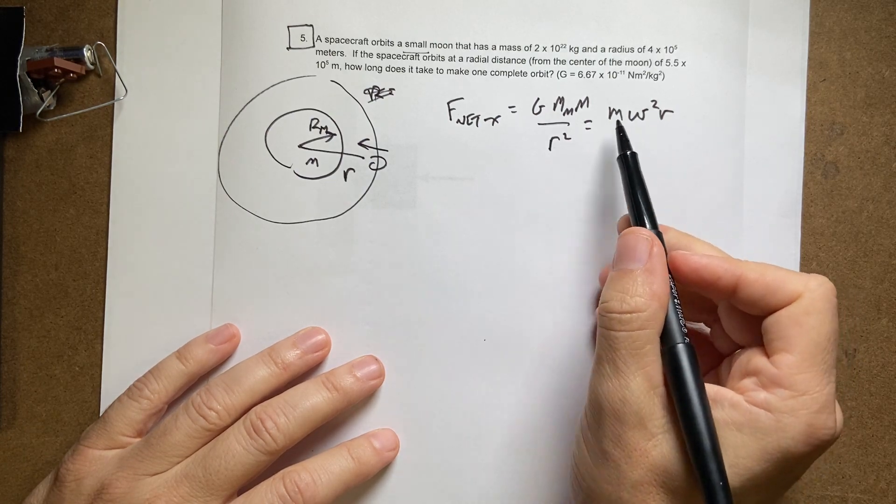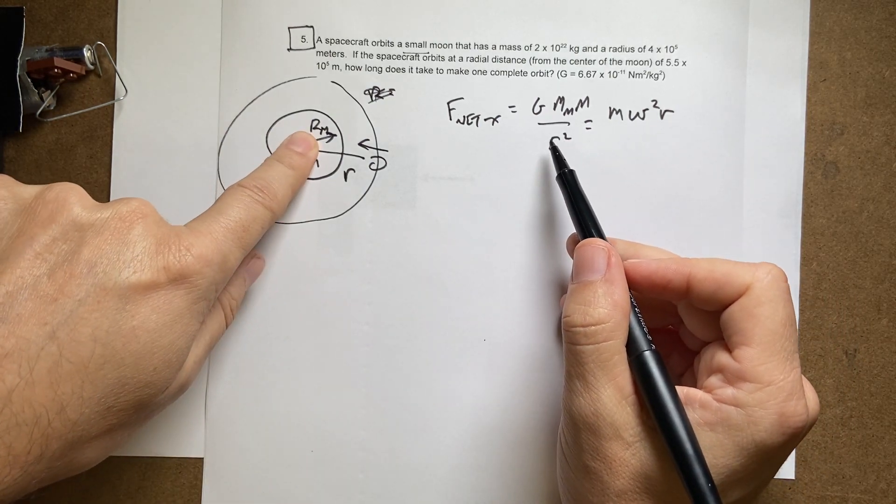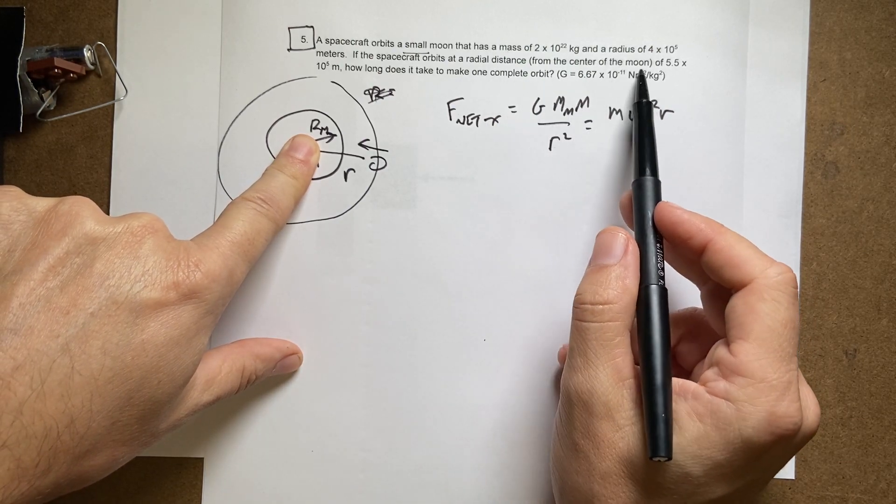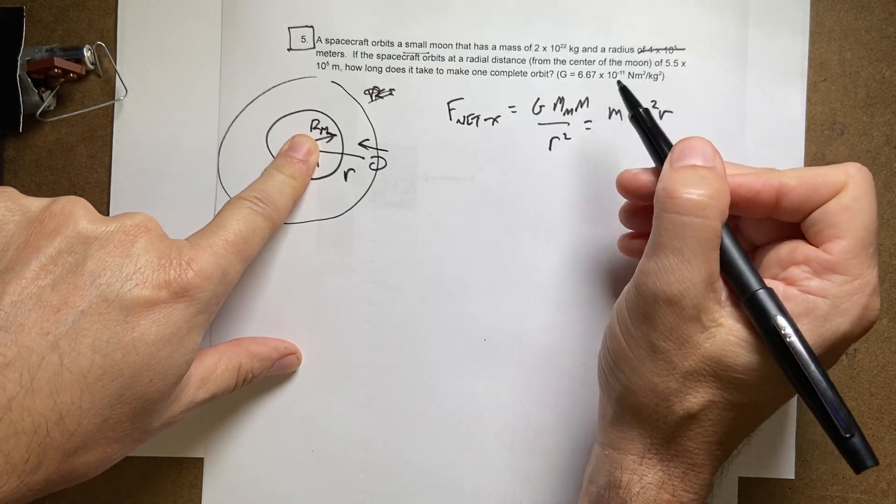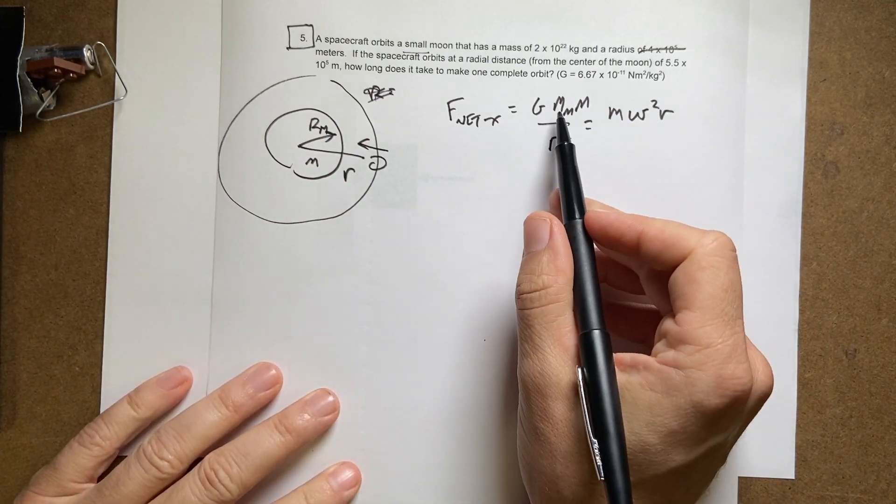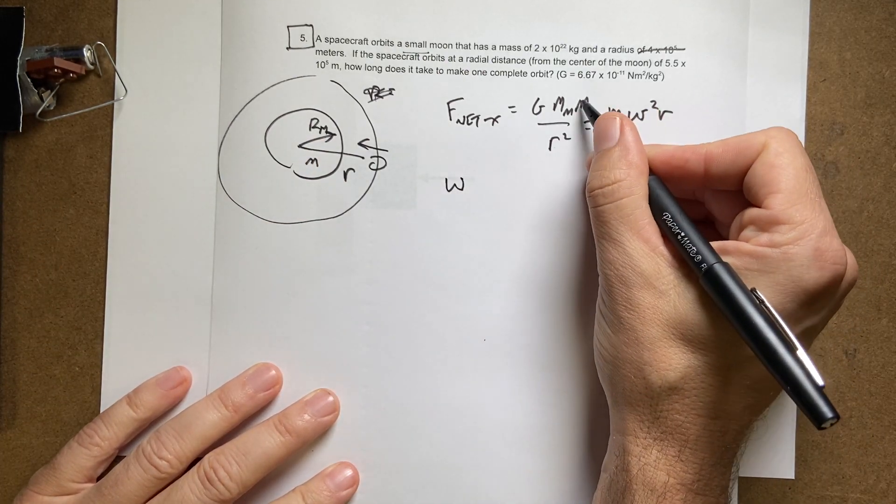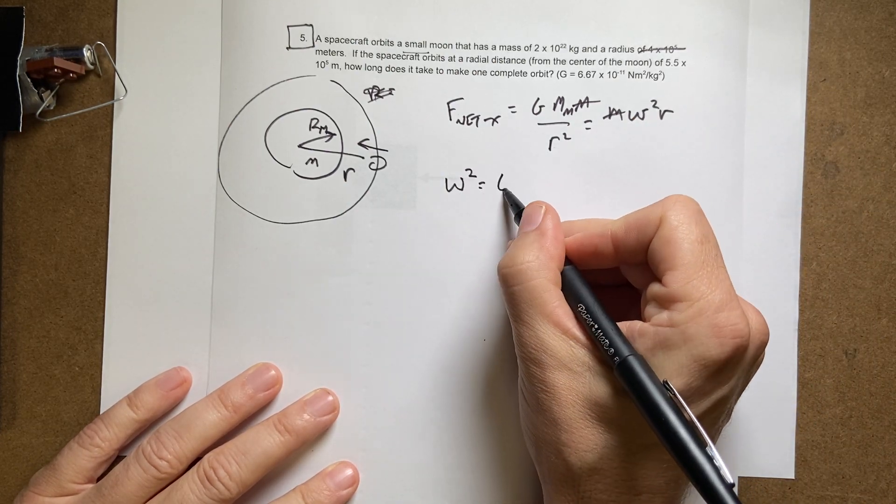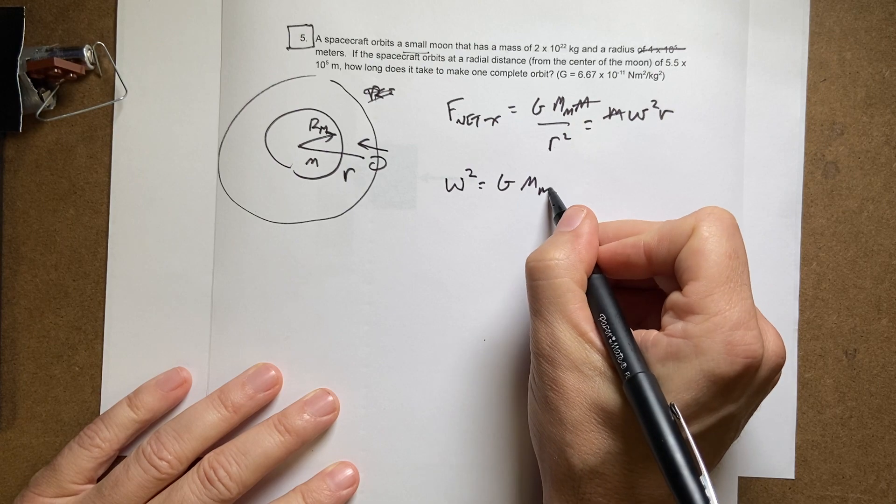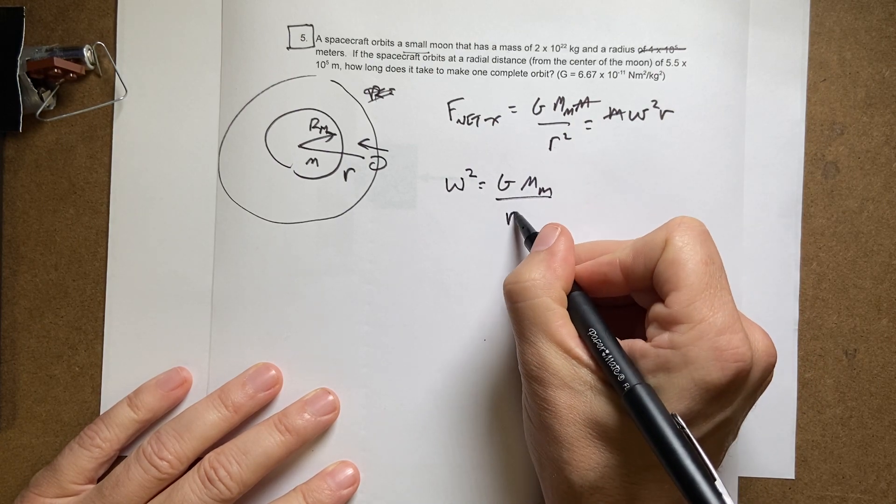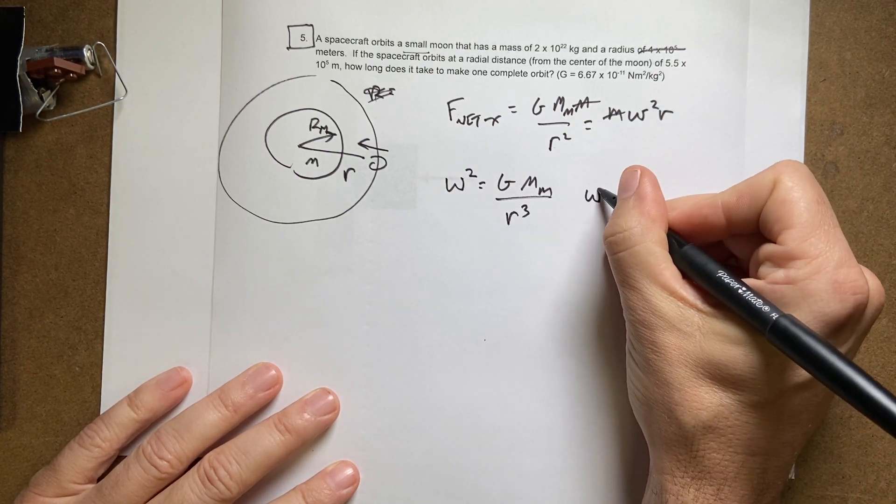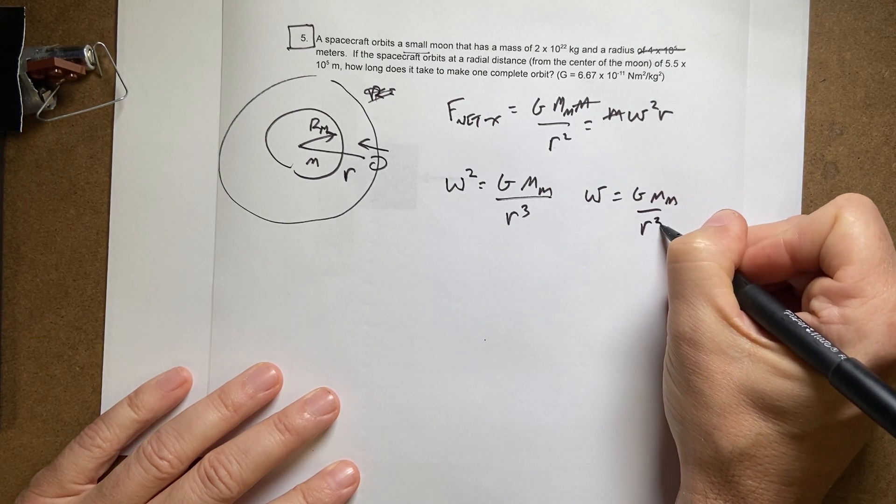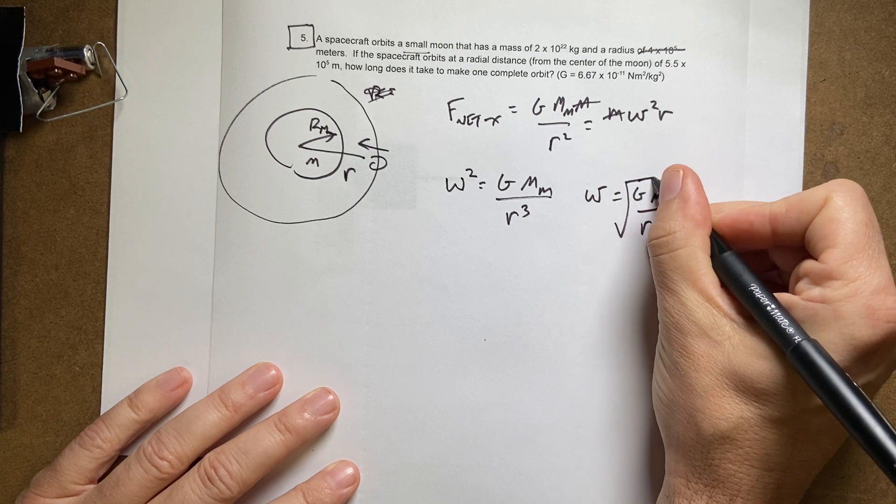So these r's are the important one. That r actually doesn't even matter, okay? It doesn't matter unless I said you're from the center of the moon, so this doesn't even matter. Okay, now I want to solve for omega. I get, oh look, masses cancel. So I get omega squared equals G mass of the moon over r cubed. So omega equals the square root of G mass of the moon over r cubed.